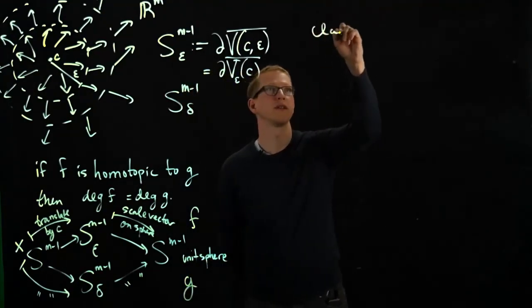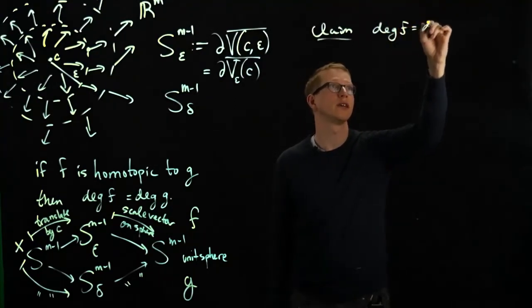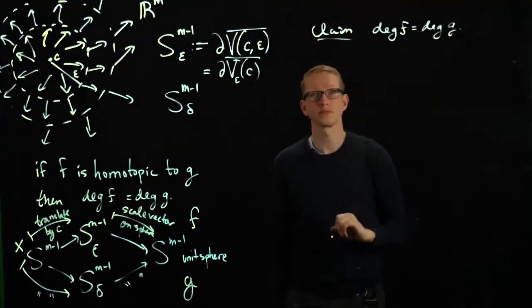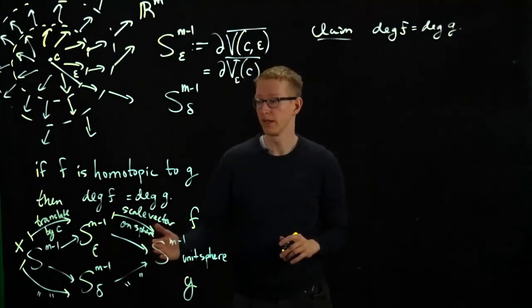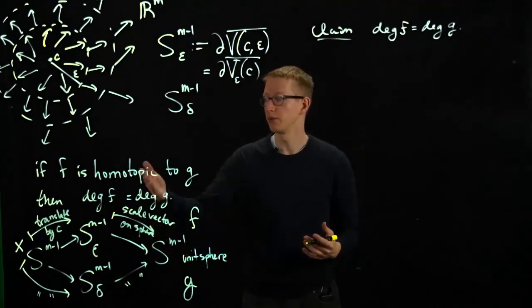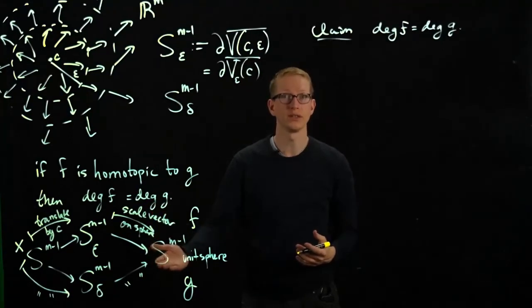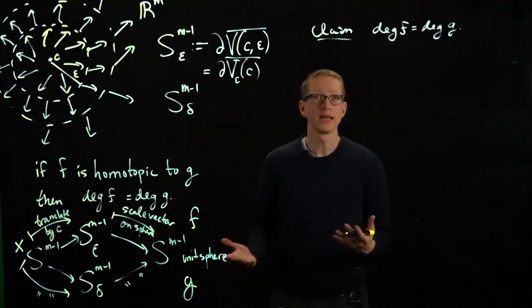So the claim is that the degree of f equals the degree of g. So the question that we have to answer is, if we knew f and g were smoothly homotopic, then we could use this fact above to prove that the degrees are actually the same. And why is that true?